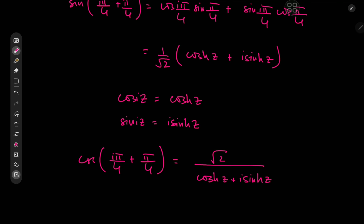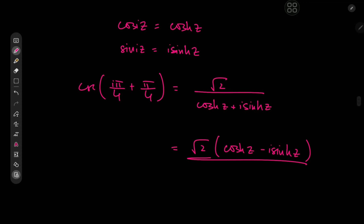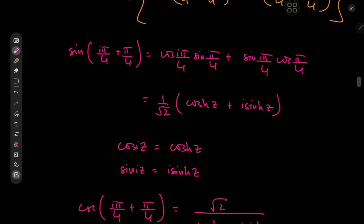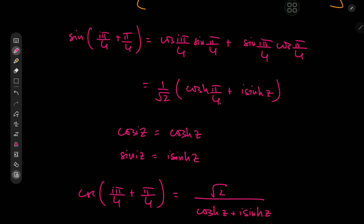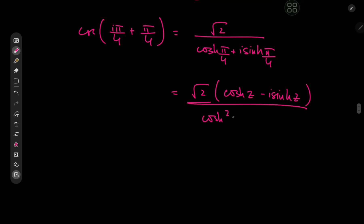Using this result, we have cosecant(iπ/4 + π/4) equal to √2 divided by [cosh(π/4) + i·sinh(π/4)]. We need to separate this into real and imaginary parts, so we multiply by the conjugate: √2 times [cosh(π/4) − i·sinh(π/4)] over cosh²(π/4) plus sinh²(π/4). I should note I mistakenly wrote z instead of π/4 earlier — apologies for that.